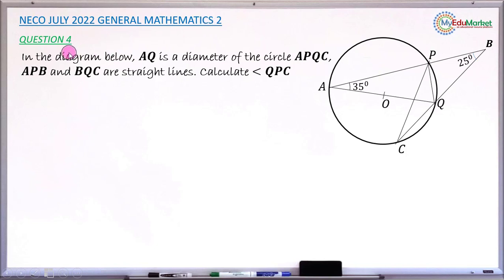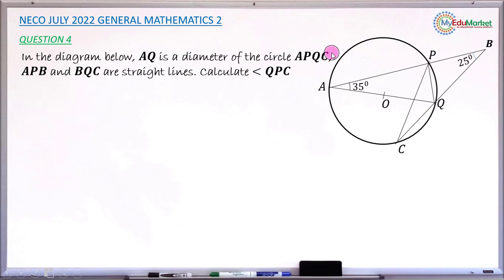We are answering question number 4. The question reads: in the diagram below, line AQ is a diameter of the circle, and that circle is called APQC. APQC lies on the circumference of that circle.